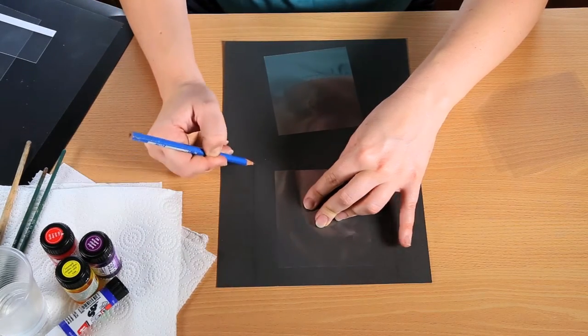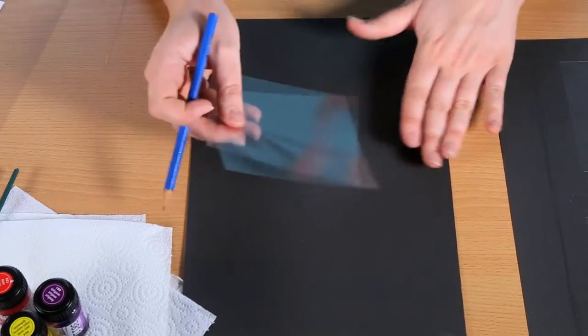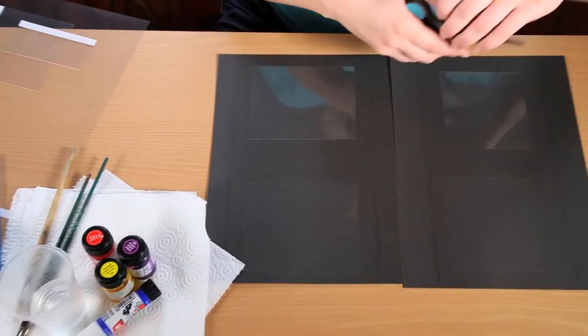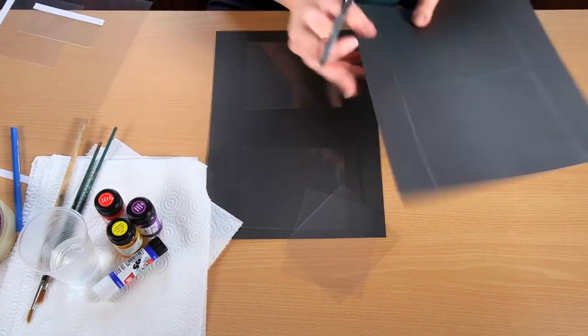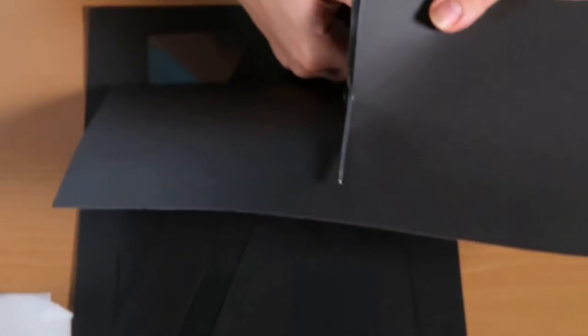Same with the other ones. You've done your templates and you need to cut everything out. So we'll do the squares first, cut those out, and then we'll cut out the rectangles.